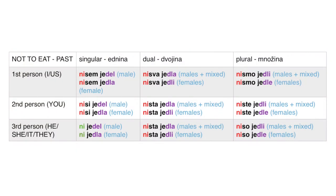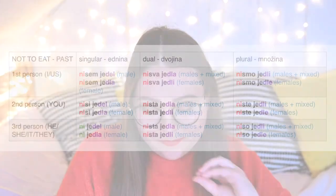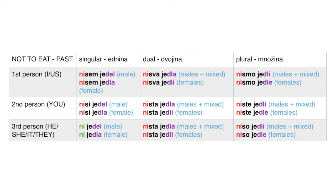For the verb 'not to eat' in past tense, we take the forms we just covered and put 'ni' in front of the conjugated verb 'to be'. The only exception is third person singular, where the conjugated verb 'to be' is dropped. First person singular is 'nisem jedel' or 'nisem jedla'. Second person singular is 'nisi jedel' or 'nisi jedla'. Third person singular is 'ni jedel' or 'ni jedla' — not 'ni je jedel', because that would mean 'he didn't eat it', introducing an object.